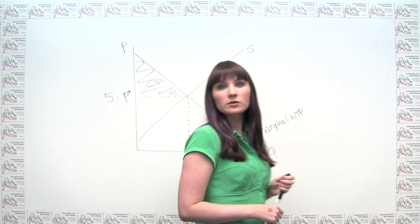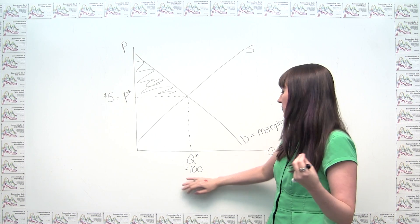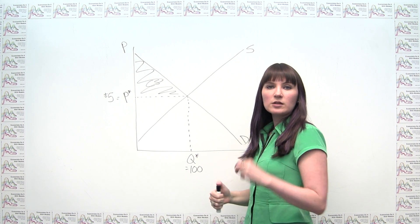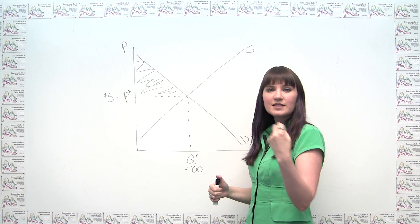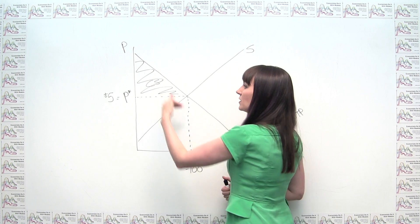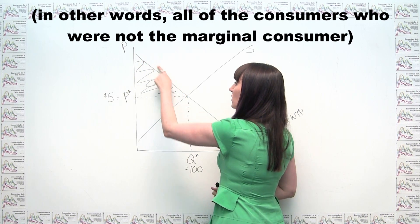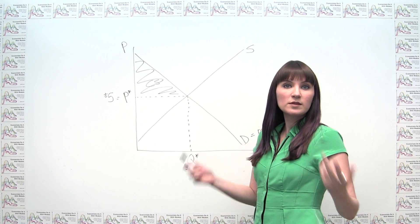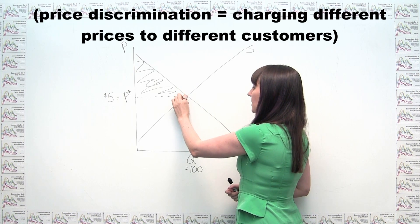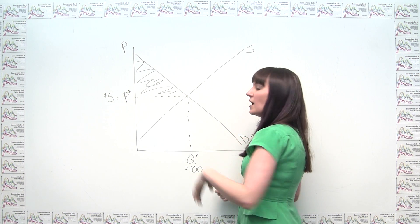So while it might be true that the willingness to pay of this marginal consumer — the willingness to pay for this 100th unit — might be $5, that doesn't mean the willingness to pay for all of them is $5. The surplus actually happens for all the customers who are willing to pay more than the market price. We have a whole bunch of customers who were willing to pay more than $5 but still got it at $5 because there was no price discrimination. The only person getting a consumer surplus of zero is in fact this last marginal consumer.